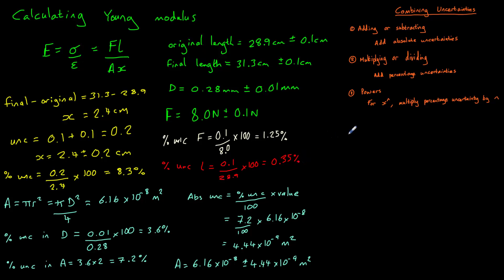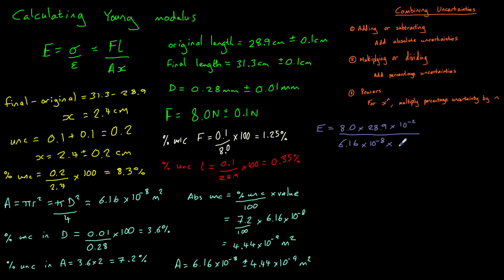Finally, we calculate Young's modulus E. E = (8.0 × 28.9 × 10⁻²) / (6.16 × 10⁻⁸ × 2.4 × 10⁻²), which gives us 1.56 × 10⁹ pascals.